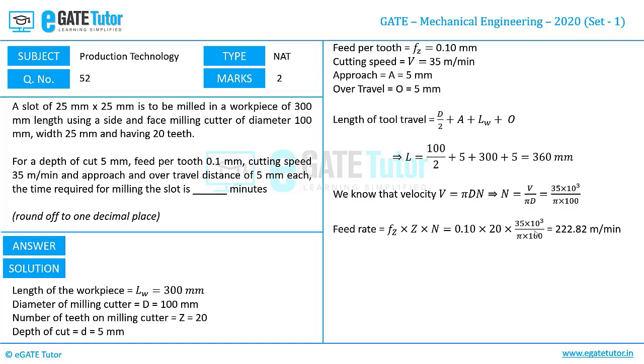Now let us calculate the machining time required per pass, which is the length of tool travel divided by the feed rate. This gives us 1.61 minutes per pass.